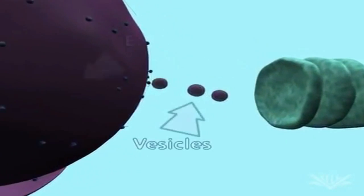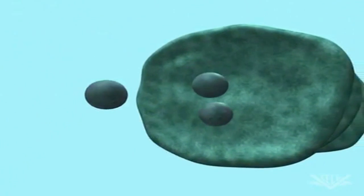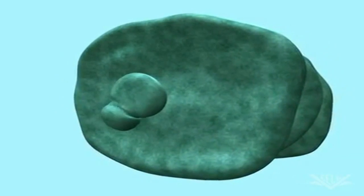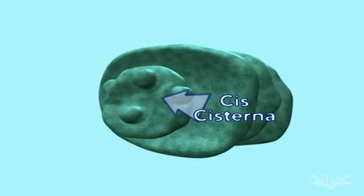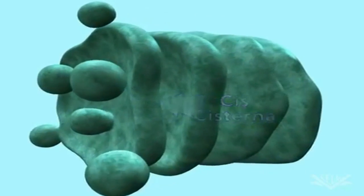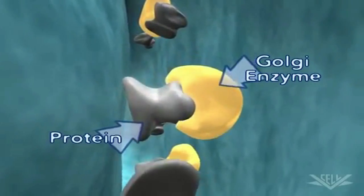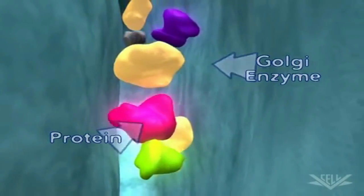Translated proteins are encapsulated in vesicles in the ER. A group of these vesicles fuse, and these fused vesicles form the cis-cisterna. As the protein moves through the stack, it is modified by resident Golgi enzymes at specific locations in the apparatus. These modifications are important because they provide the signal that determines the final destination of the protein.